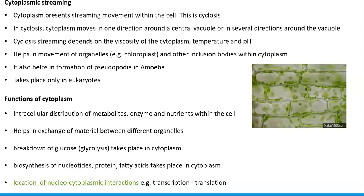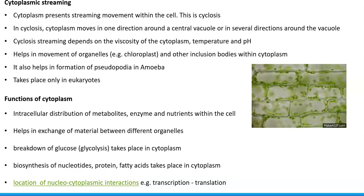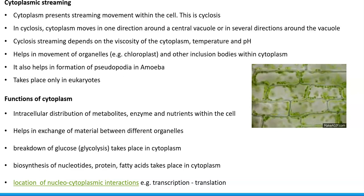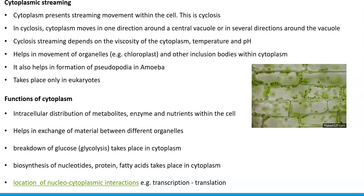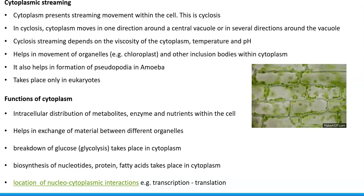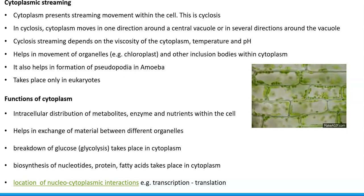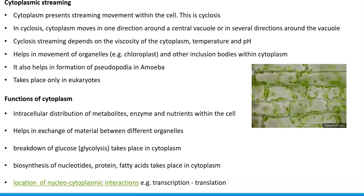In some protists such as amoeba, in addition to pseudopodia, cytoplasmic streaming also helps in the movement of the amoeba cells. It takes place mainly in eukaryotes and not in prokaryotes — that is, cytoplasmic streaming is absent in prokaryotic organisms.